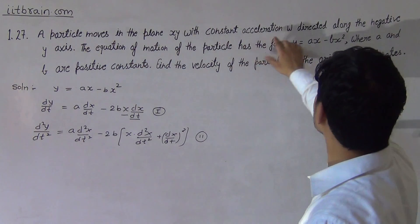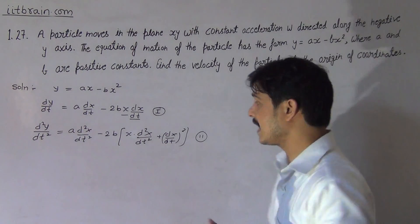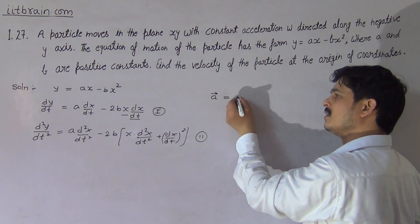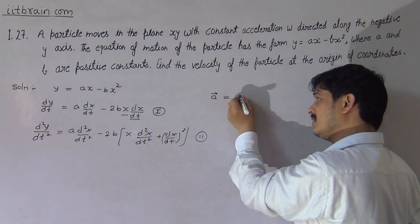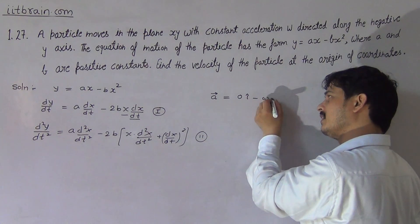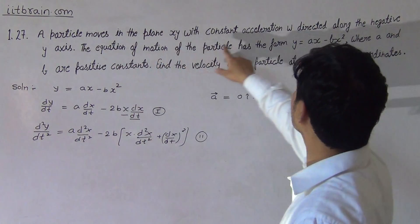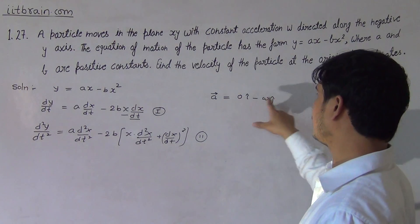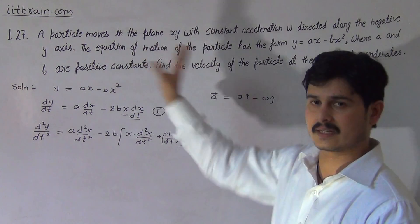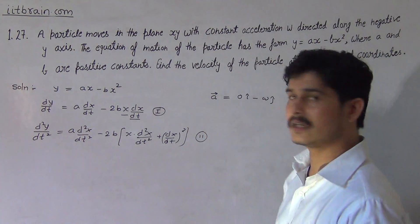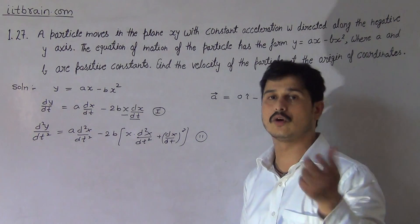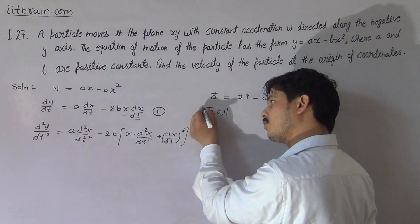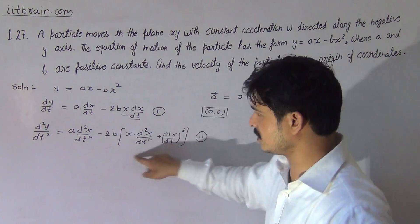Since the particle moves in the xy plane with constant acceleration directed along the negative y-axis, the acceleration vector is 0î - ωĵ. This means there is no component along the x-axis, and ω is the magnitude of acceleration along the negative j-axis. We need to calculate the velocity at the origin of coordinates, meaning our calculation is at the point (0, 0).